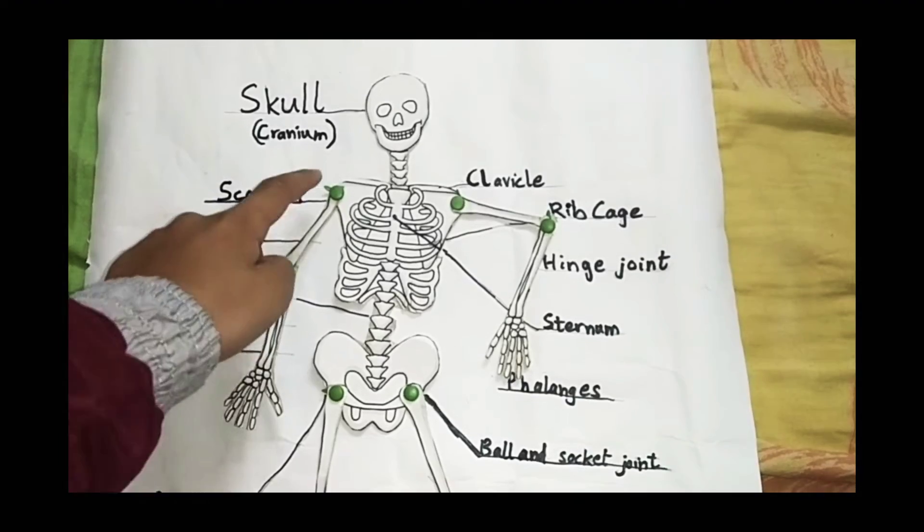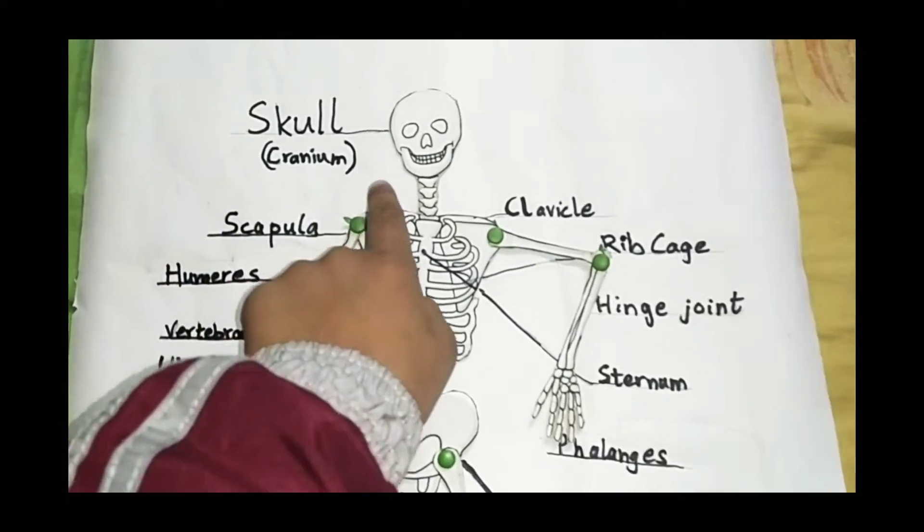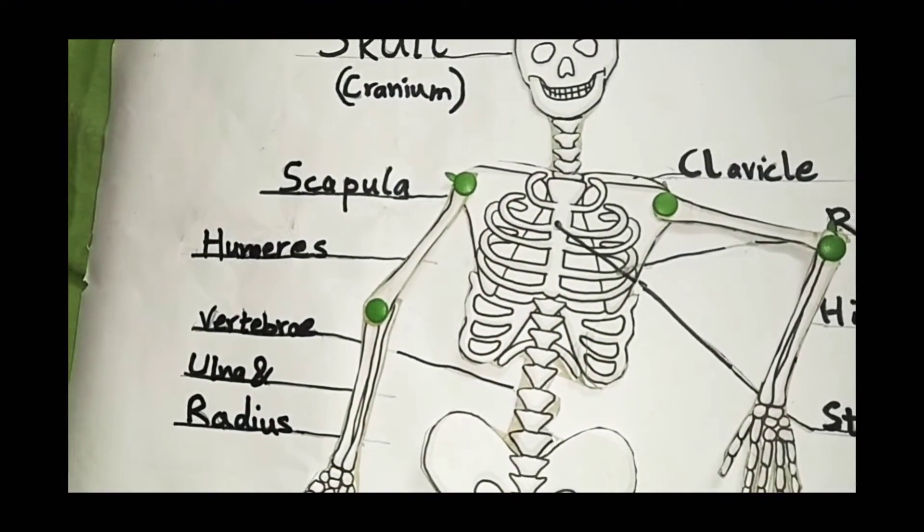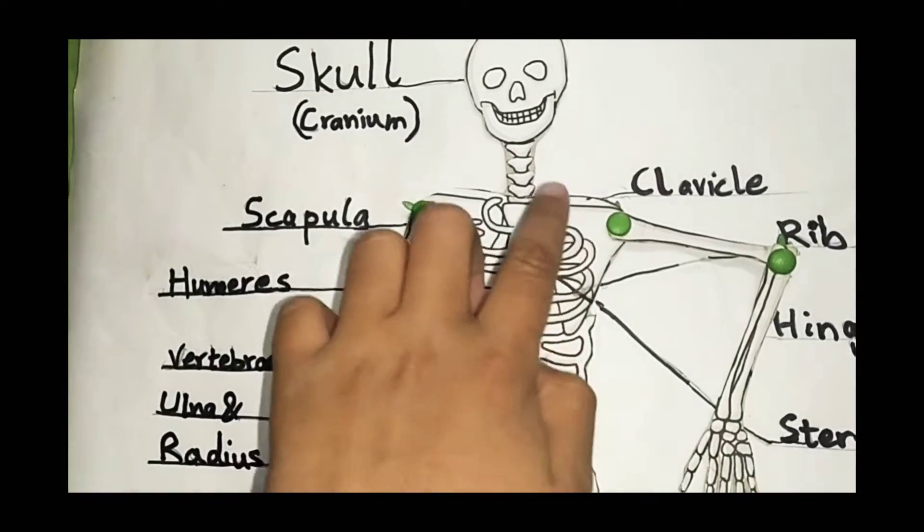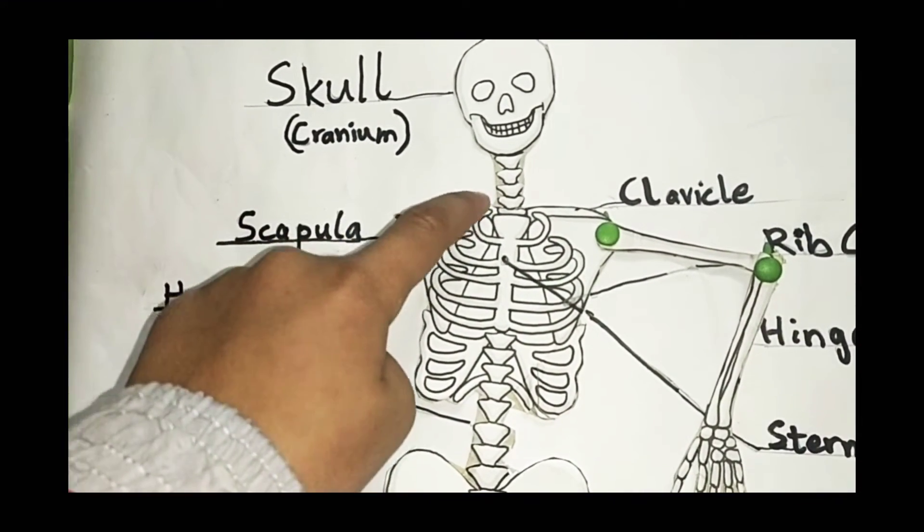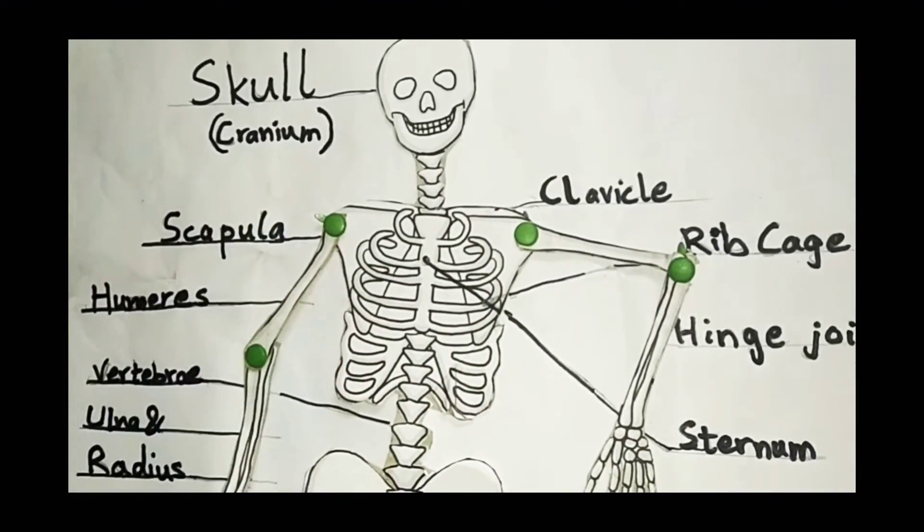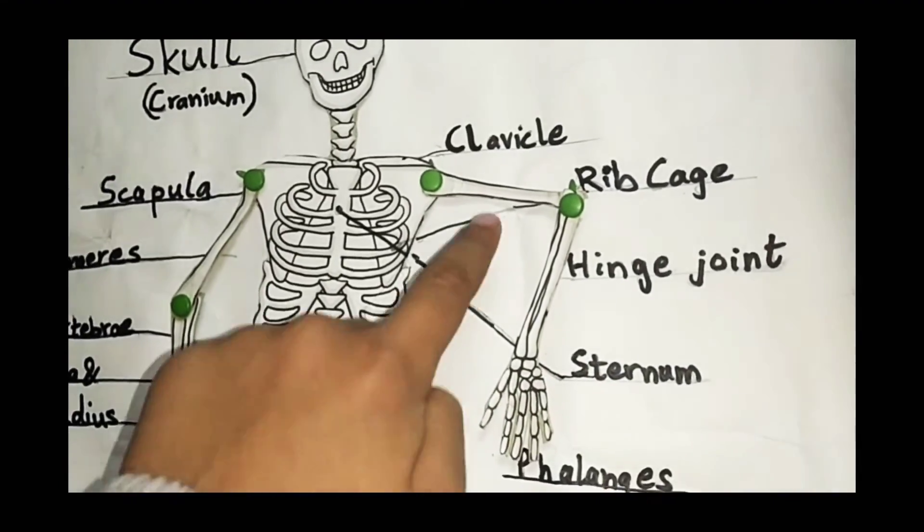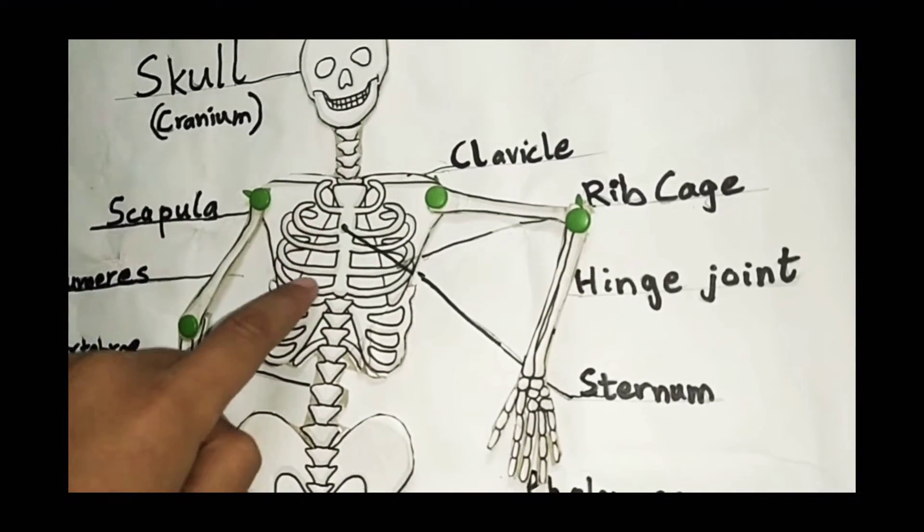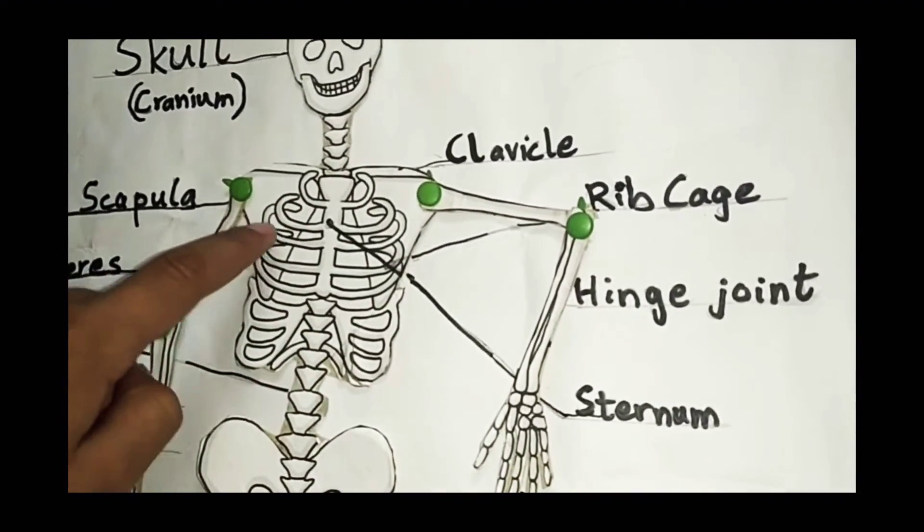This is scapula, the shoulder blade. Over here is ball and socket joint. This is the clavicle, it's also called collarbone. The rib cage is like a jail, and in there are lungs and heart.